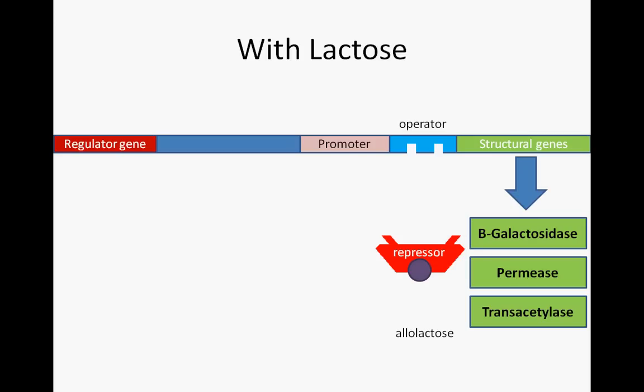However, repressor-mediated transcription control of the lac operon only tells half of the story. Even if lactose is present, beta-galactosidase, permease, and transacetylase will not be produced if another more desirable energy source is available. Because glucose is preferable to lactose, it would be a waste of energy to produce the tools for dealing with lactose only then to use glucose instead.